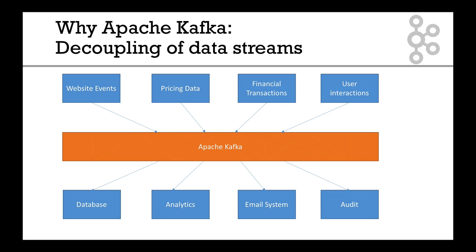So Apache Kafka comes in the middle. It helps you decouple your data streams. On the top we have all sources: website events, pricing data, financial transactions, or user interactions — and they will all publish the data to Apache Kafka. Then your databases, your analytics, your email systems, your audits can just take the data from Kafka and do whatever they want with it.